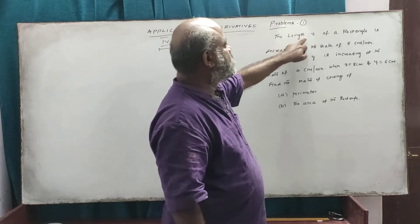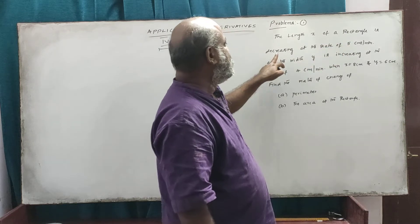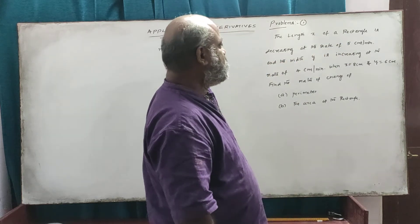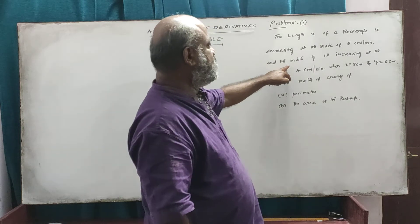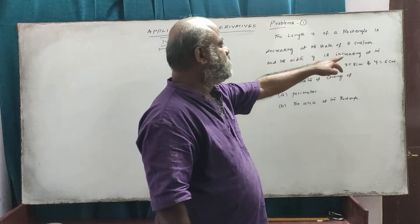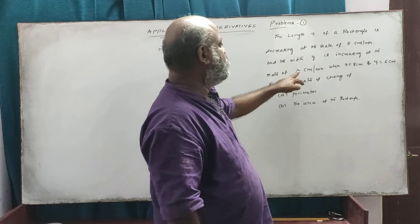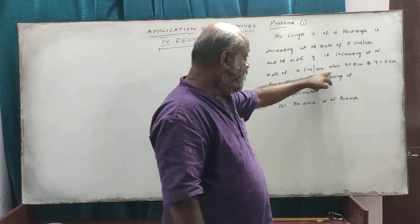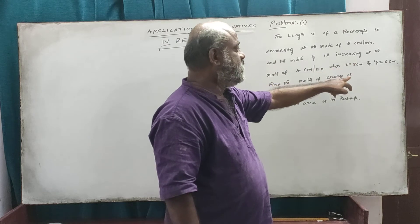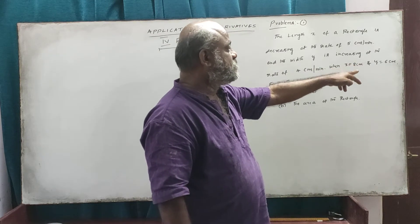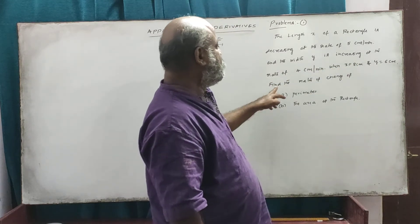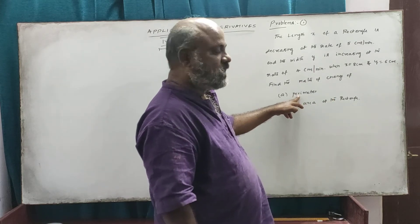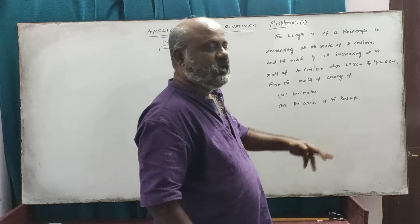The length x of a rectangle is decreasing at the rate of 5 cm per minute and the width y is increasing at the rate of 4 cm per minute. When x is equal to 8 cm and y is equal to 6 cm, find the rate of change of perimeter and the area of the rectangle.